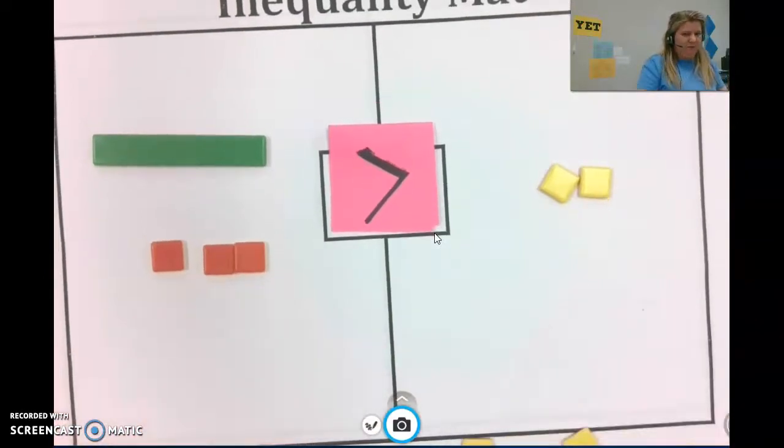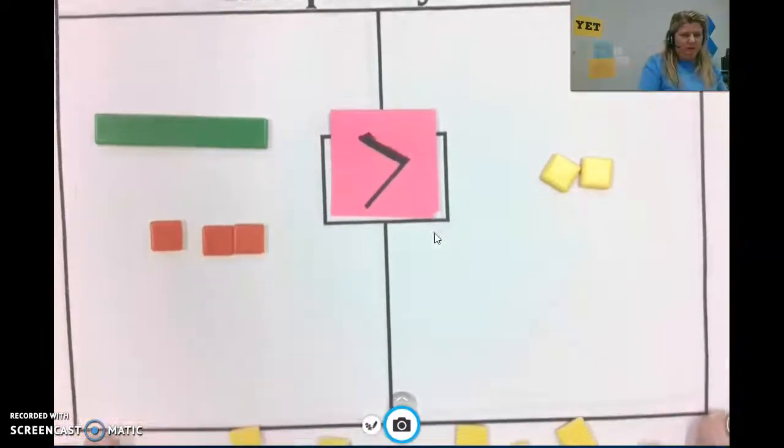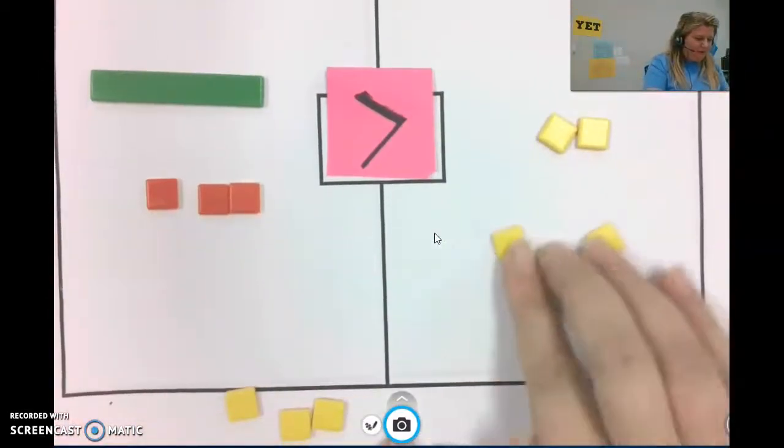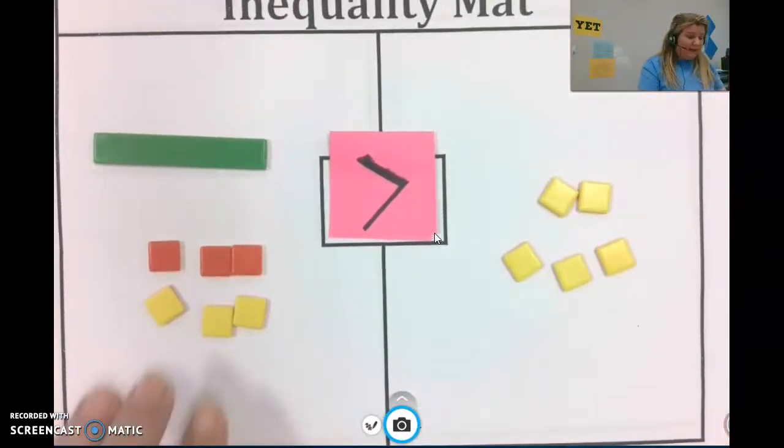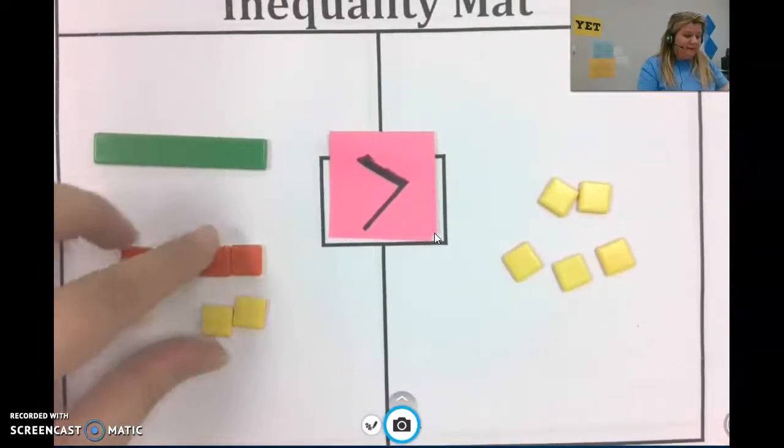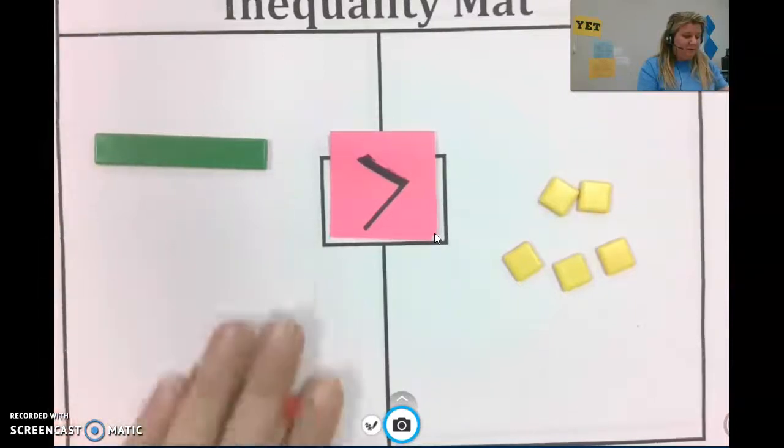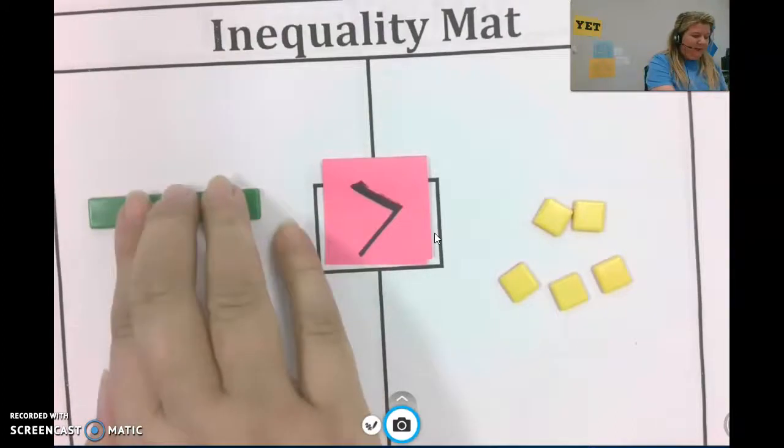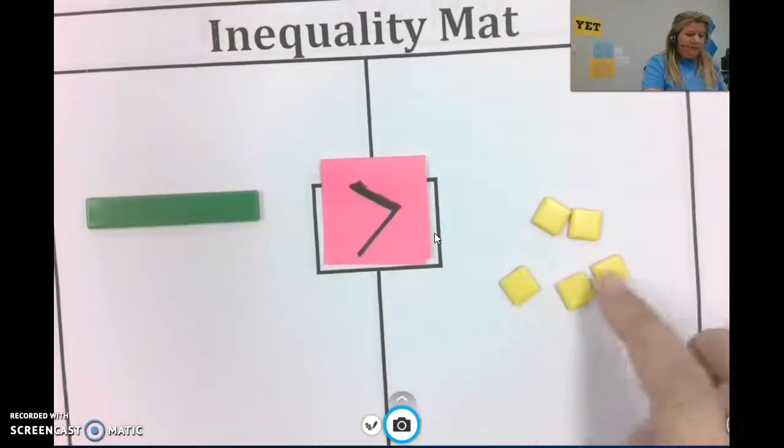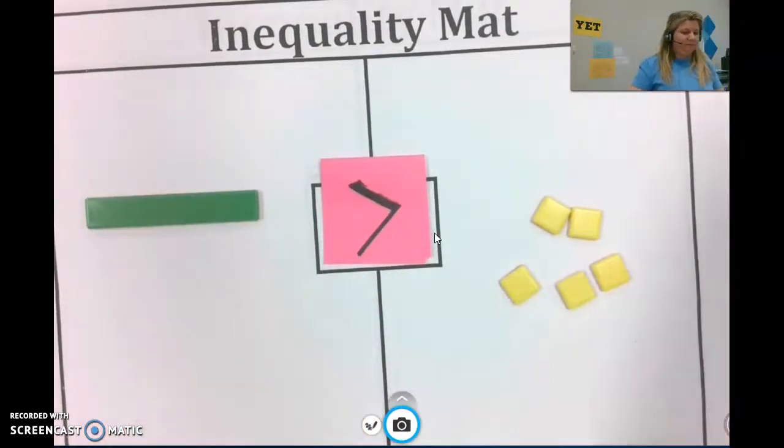So here I need to take away three negatives from each side, but I don't have three negatives over here to take away. So to make this 0 so that x is isolated, I could add three positives, but I would need to do that to each side. I like to do it at the same time. So what I'm doing is I'm adding three positives and adding three positives. The reason I did that is because these zero pairs can be eliminated, leaving me with x is greater than 5.